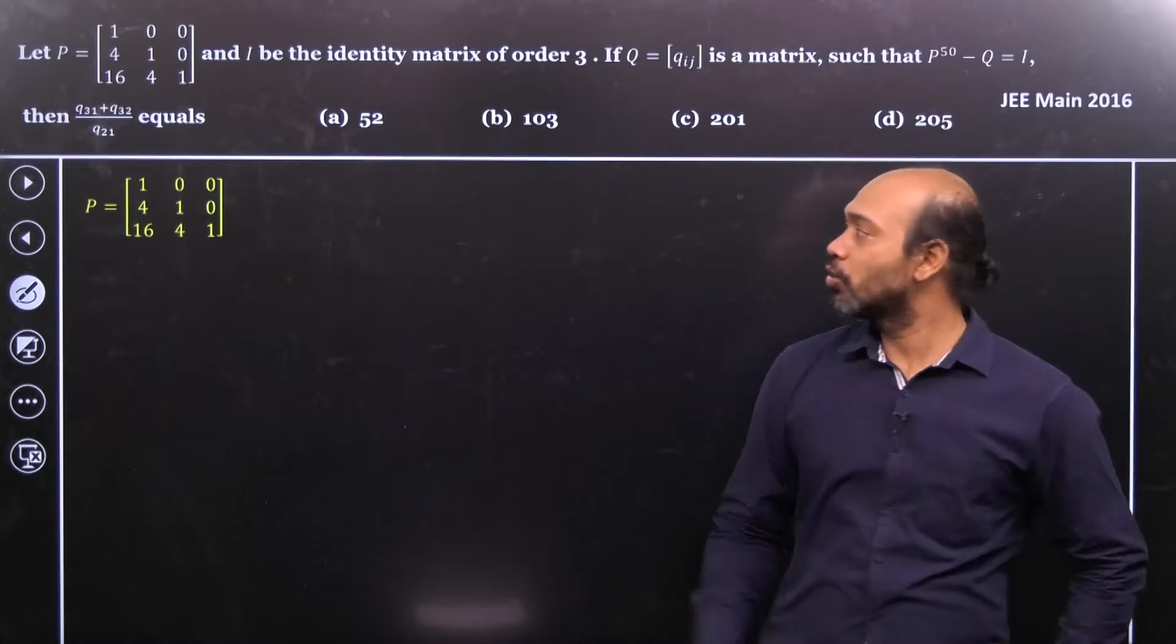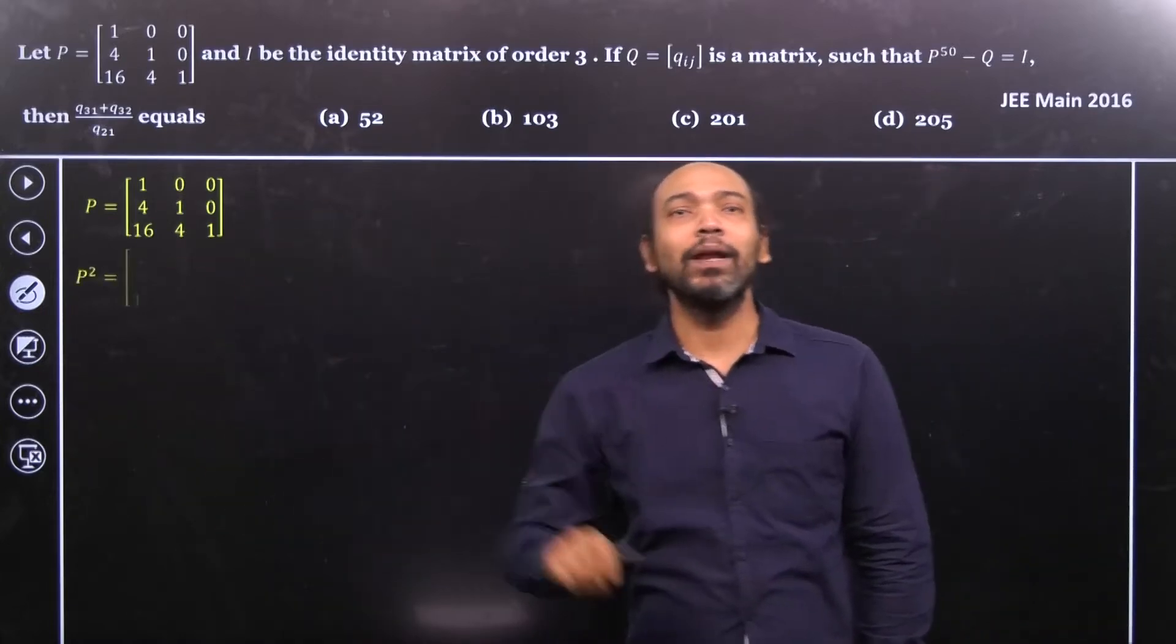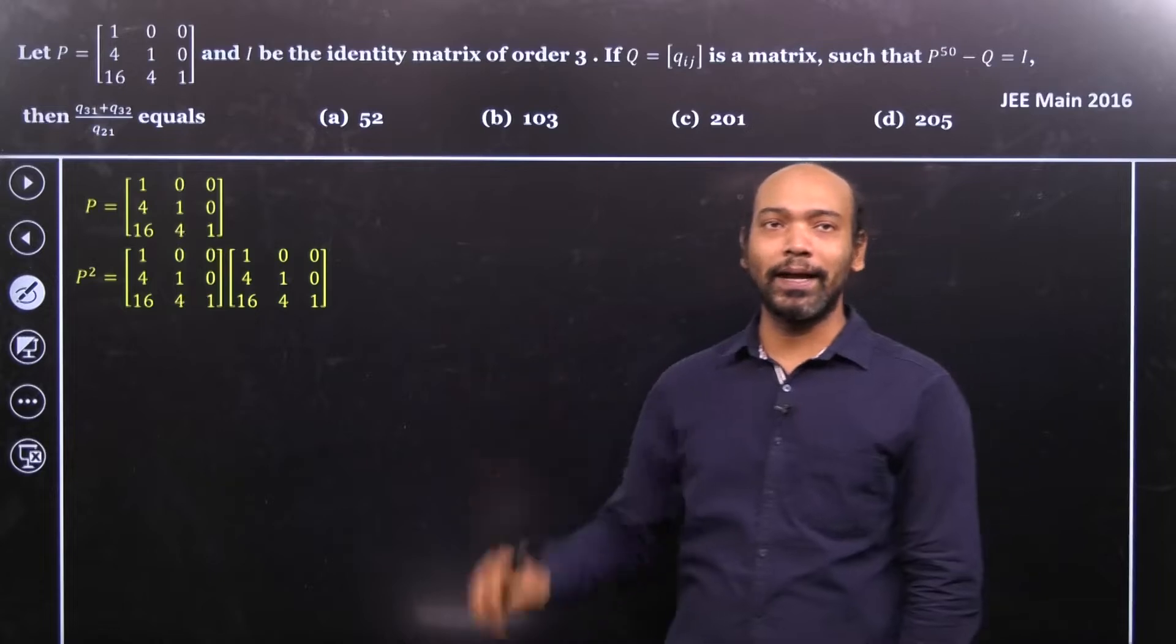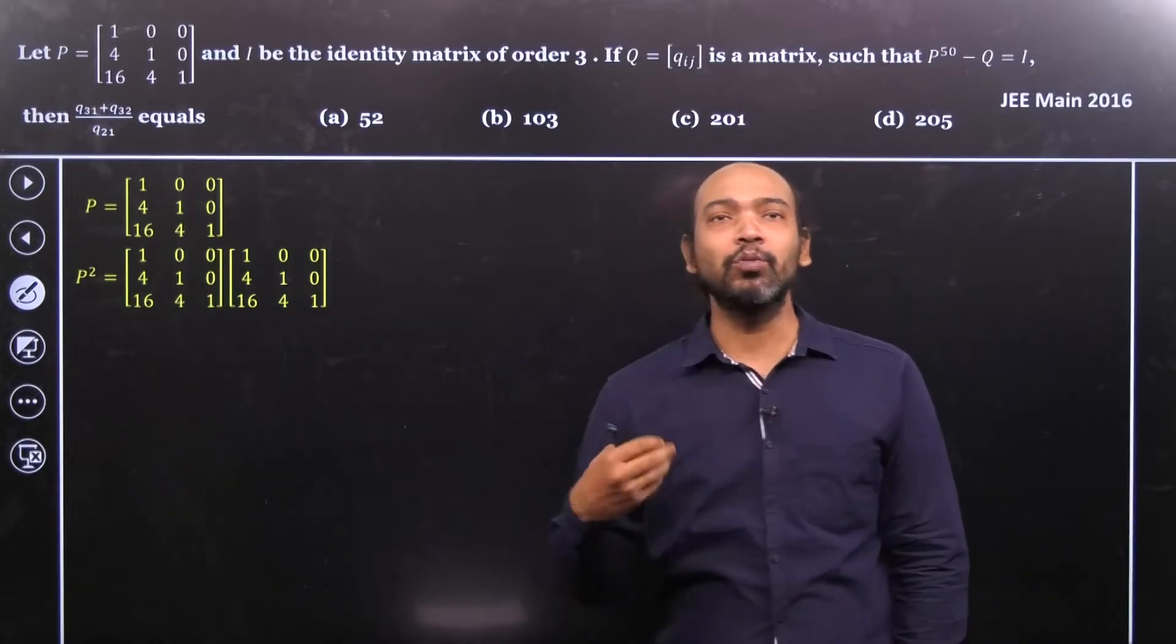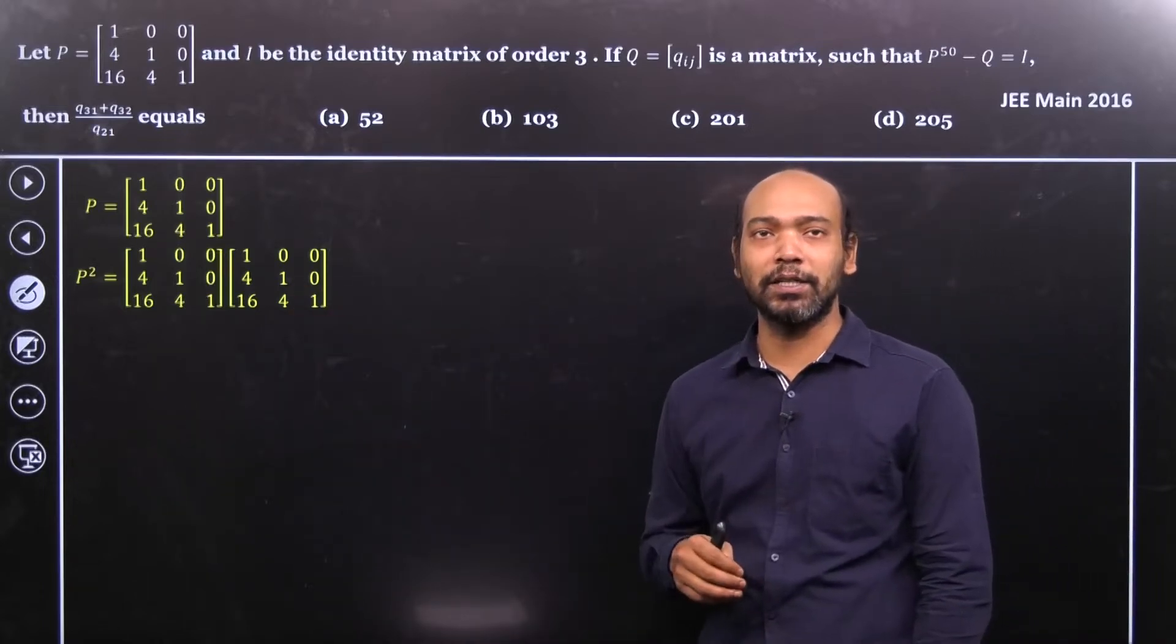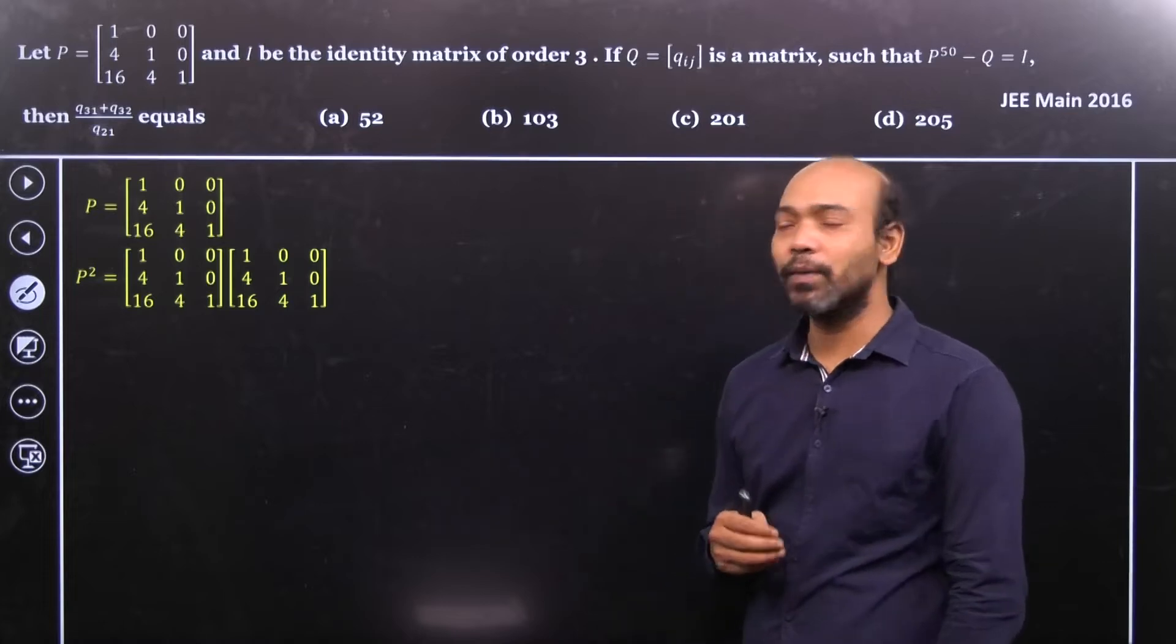Now what is P square? So if I multiply P with the same matrix, we will get P square. So let us go ahead. So we get P square. Now obviously we need to calculate that. We all know about the matrix multiplication. So how we go for matrix multiplication?